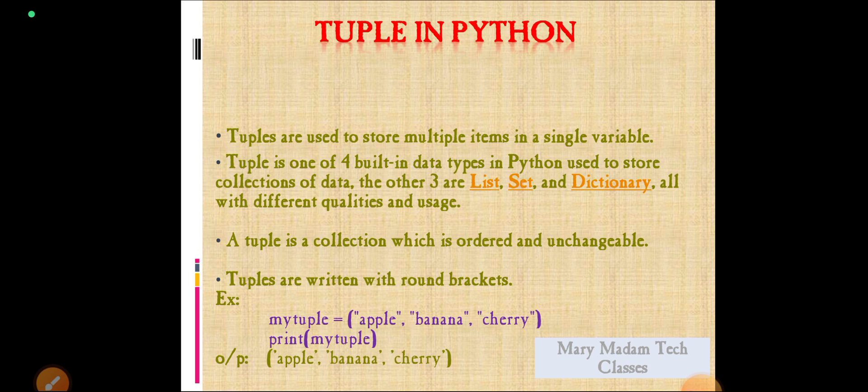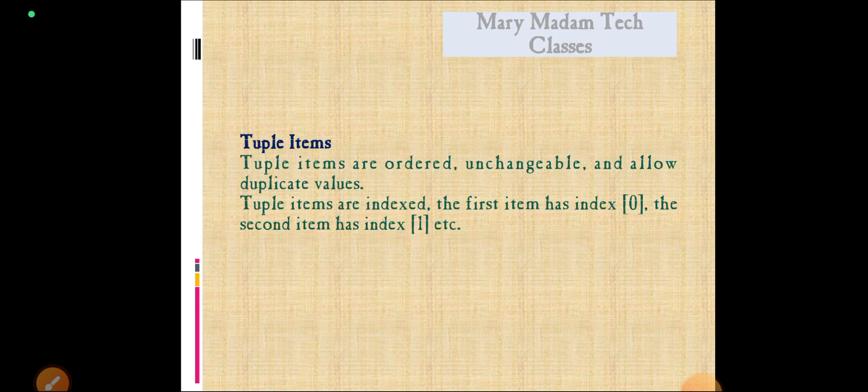Example: my tuple is equals to in round brackets we are representing within double quotations strings apple, banana, cherry. I want to print my tuple. The output is apple, banana, cherry.